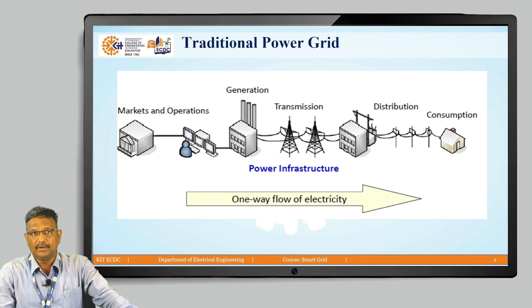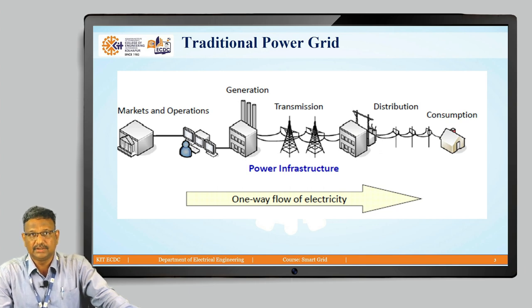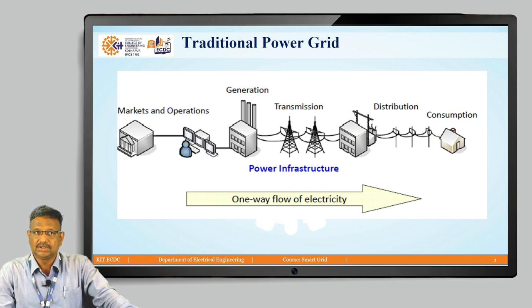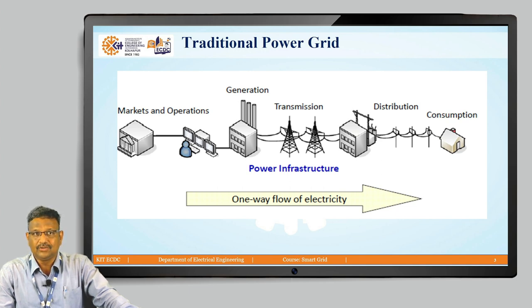When we talk about the traditional power system, there was a one-way flow of electricity: generation of electricity, transmission of electricity, and distribution of electricity, with electricity used by consumers at the end. There was no bidirectional flow — only a unidirectional flow of electricity.